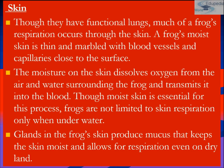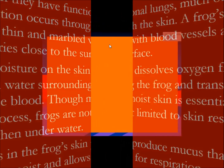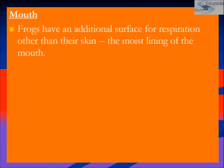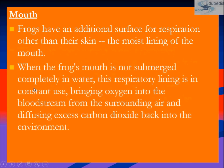So those are the three respiratory organs found in frogs: first is gills, second is lungs, and third is skin. Frogs also have an additional surface for respiration — the moist lining of the mouth. When the frog's mouth is not completely submerged in water, this respiratory lining is in constant use, bringing oxygen into the bloodstream from the surrounding air and diffusing excess carbon dioxide back into the environment.